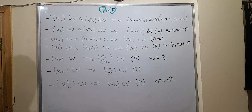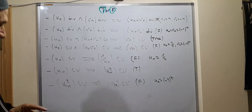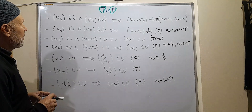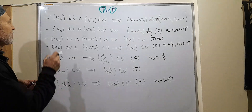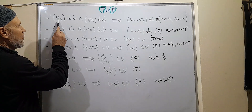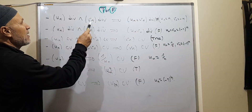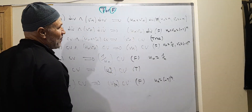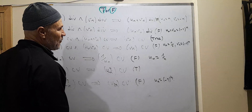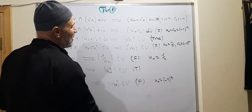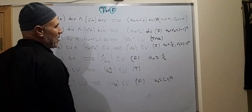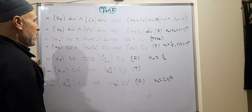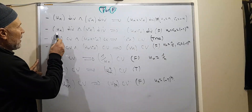This is a short video of five minutes at most. Which of these statements are true or false? We consider uN, a sequence which is divergent, and vN, a second sequence which is also divergent. How about the sum — is it divergent? The statement is false. We can take uN equal to N and vN equal to minus 1 minus N. Both are divergent, but the sum is equal to zero, a constant sequence, so it is convergent.